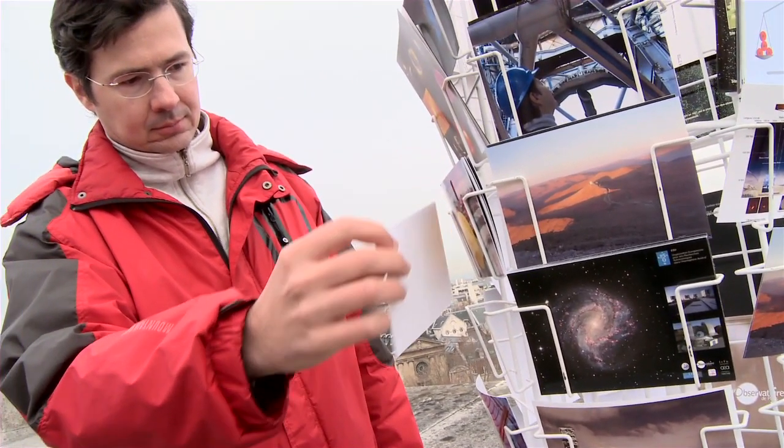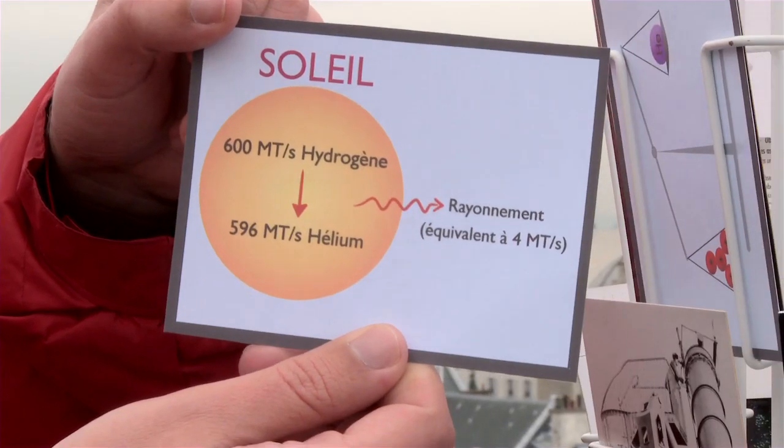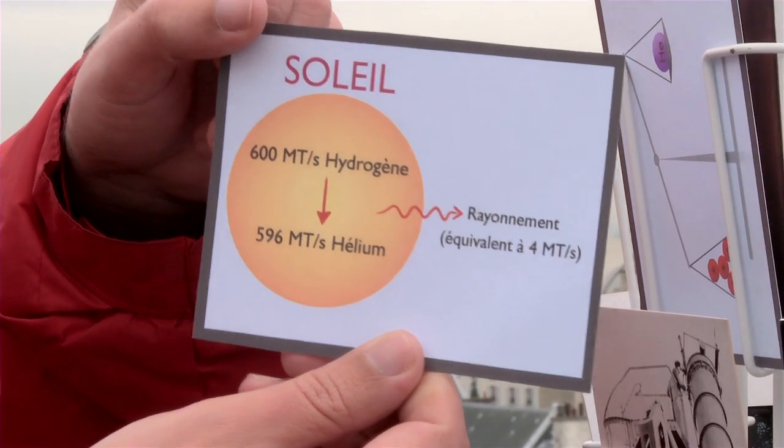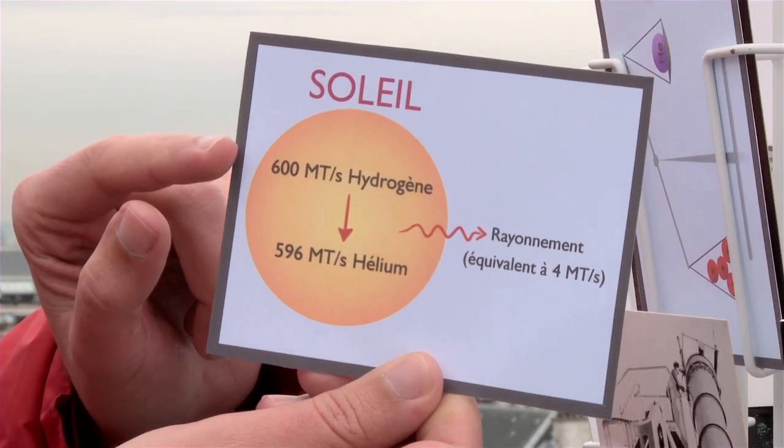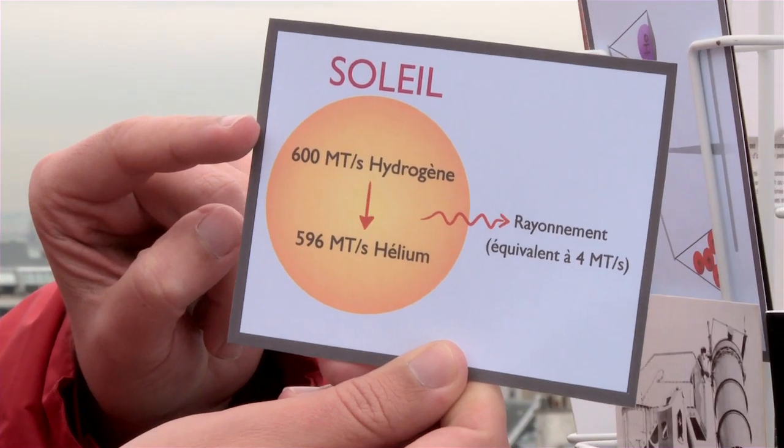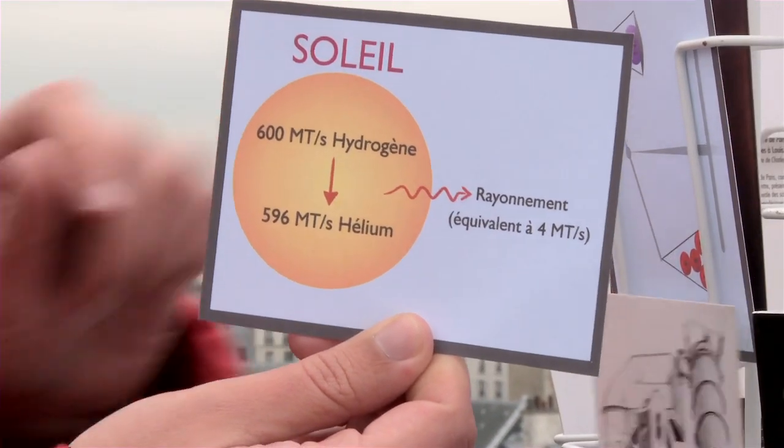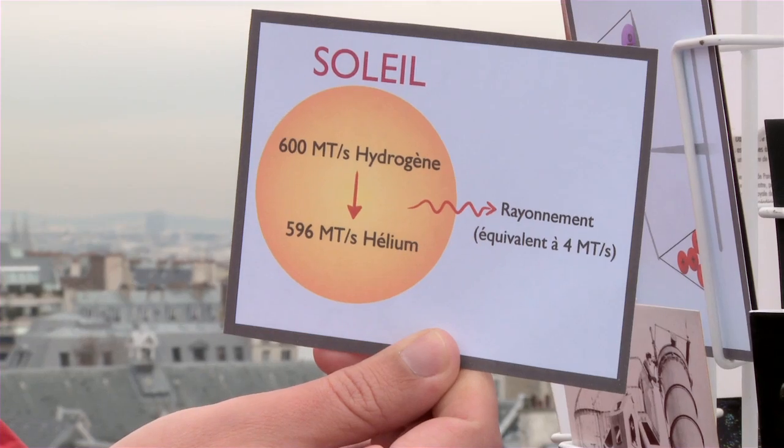For example, to produce the current radiation emitted by the sun, 600 million tons of hydrogen must be burned per second. The mass being converted into light is more than 4 million tons per second.